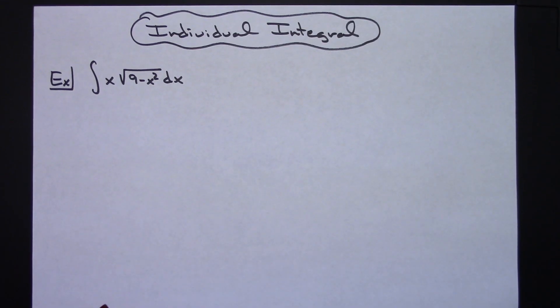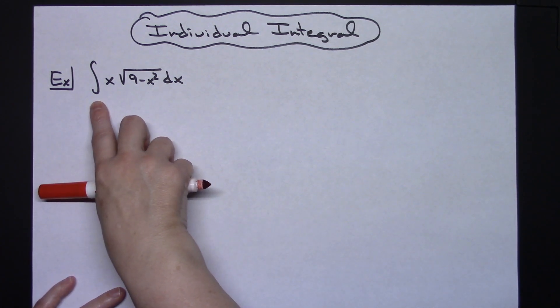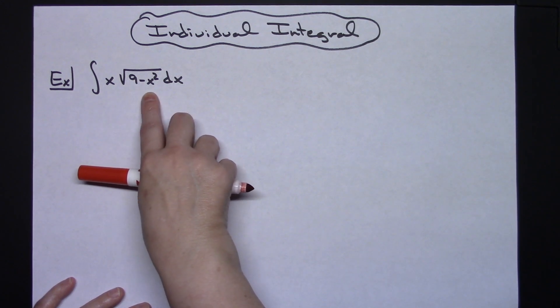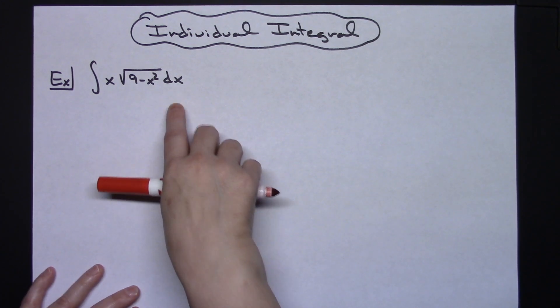In this video I'm going to work out an individual integral. It's going to be a straight u-substitution integral, one that you would find very early on in a Calc 1 class. We're going to take a look at the integral of x times the square root of 9 minus x squared dx.